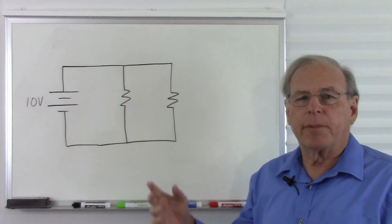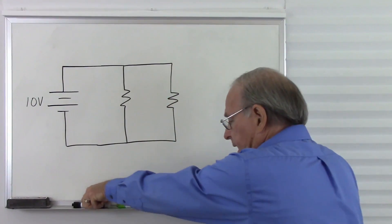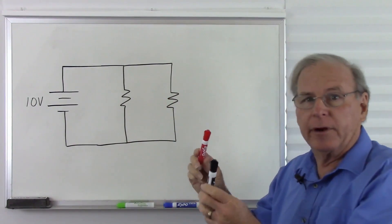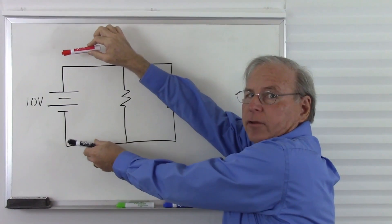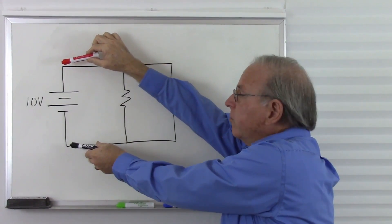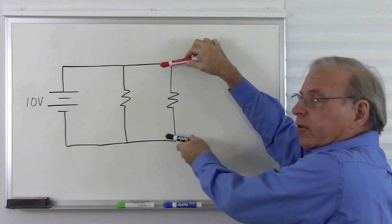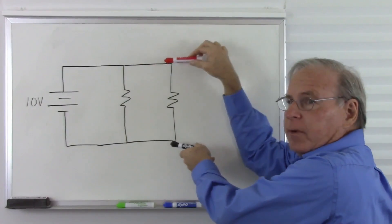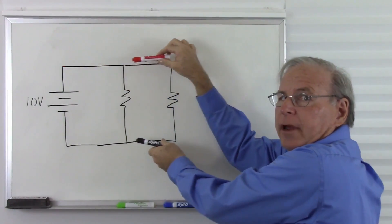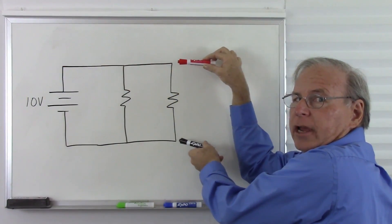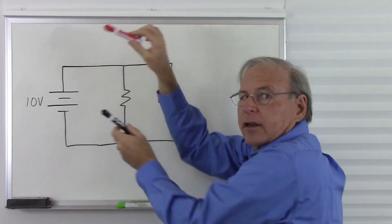The voltage in a parallel circuit is the same everywhere in the circuit. So if I take a voltmeter and measure it across the battery, I have a 10 volt battery, so there's 10 volts. And if I measure here, there's 10 volts. And if I measure here, there's 10 volts because I'm still measuring across the battery. So the voltage is the same everywhere in our circuit — 10 volts, 10 volts, and 10 volts.